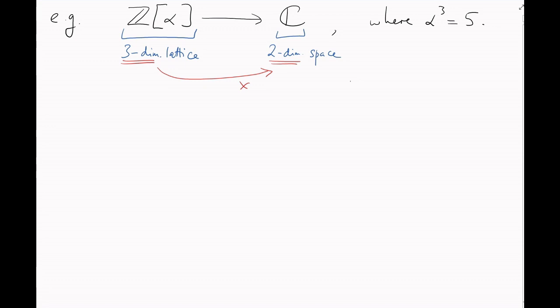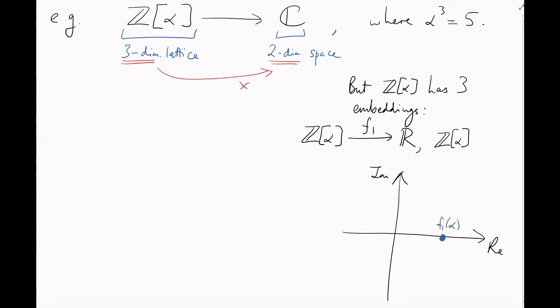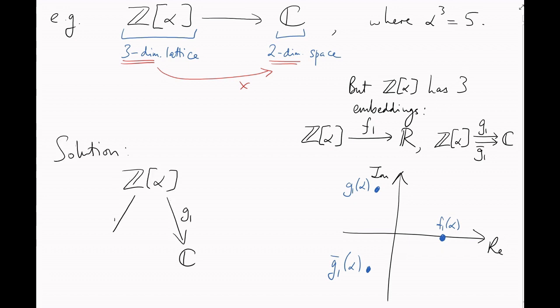This means no matter how we try to embed this into the complex plane, a two-dimensional space, the lattice is going to collapse somehow. But z of alpha has three embeddings, one real embedding, and one pair of conjugate imaginary embeddings. So we can do the same thing. Let's pick either one of our imaginary embeddings, and our real embedding, and form their product to make a three-dimensional real vector space. Turns out that z of alpha embeds into this space as the three-dimensional lattice picture that we'd expect.